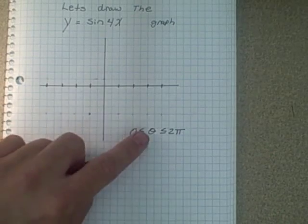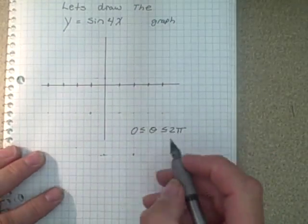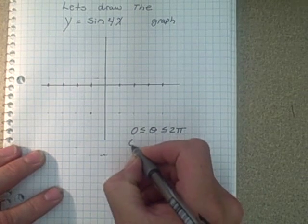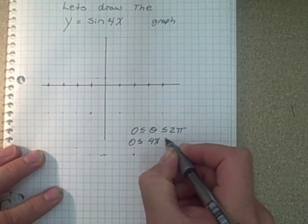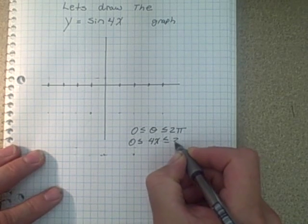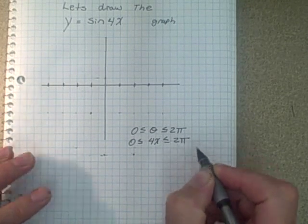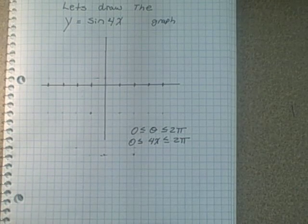Okay? So what we do is we pretend this is your normal theta. So you replace theta with 4x. So I put 4x in here. Okay? And then you divide everything by 4.